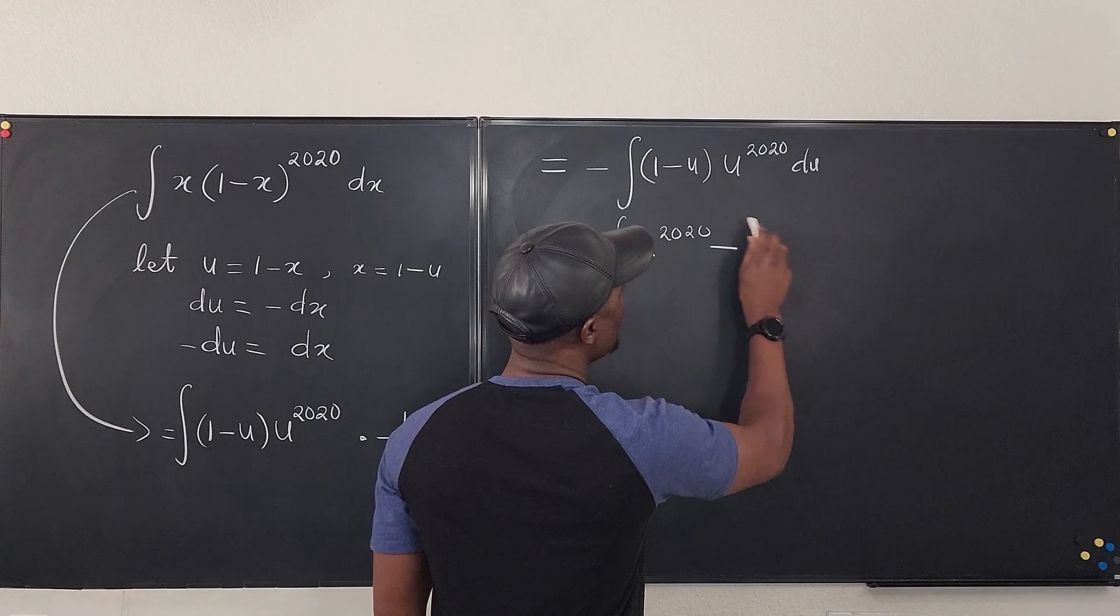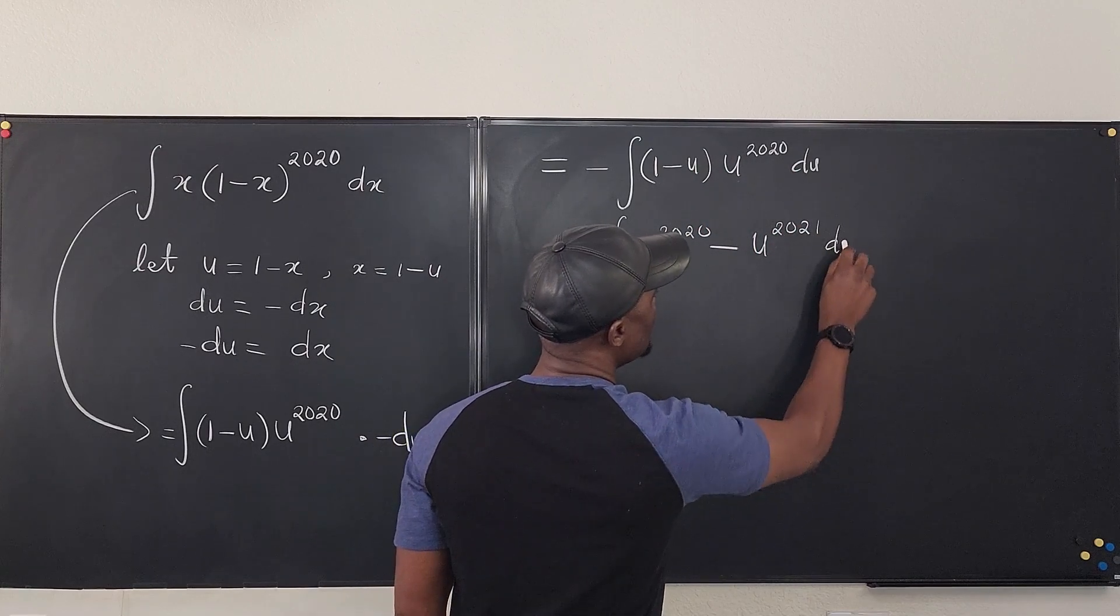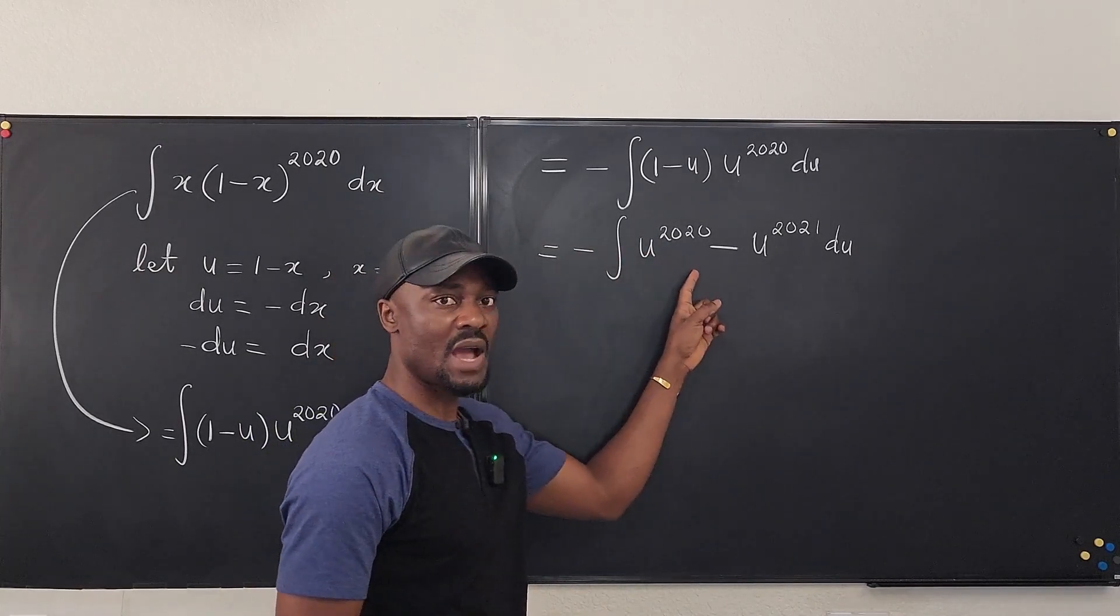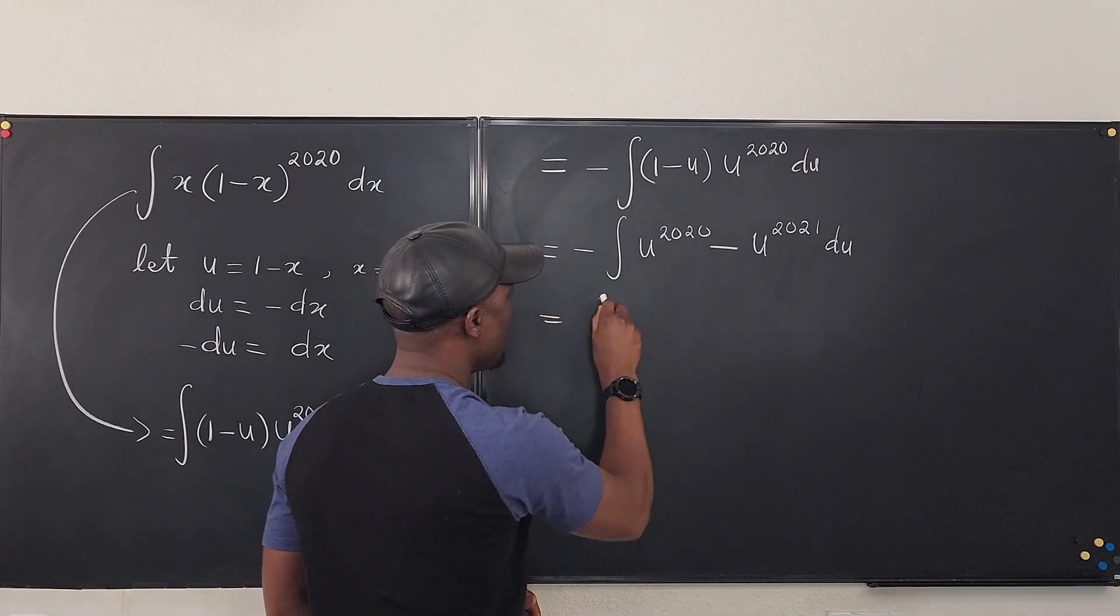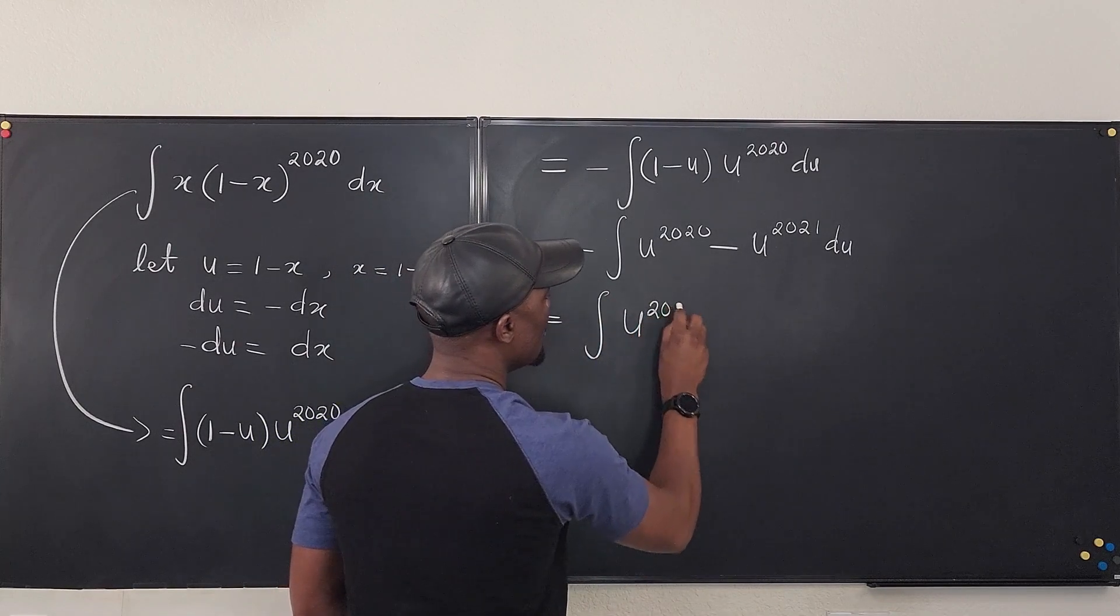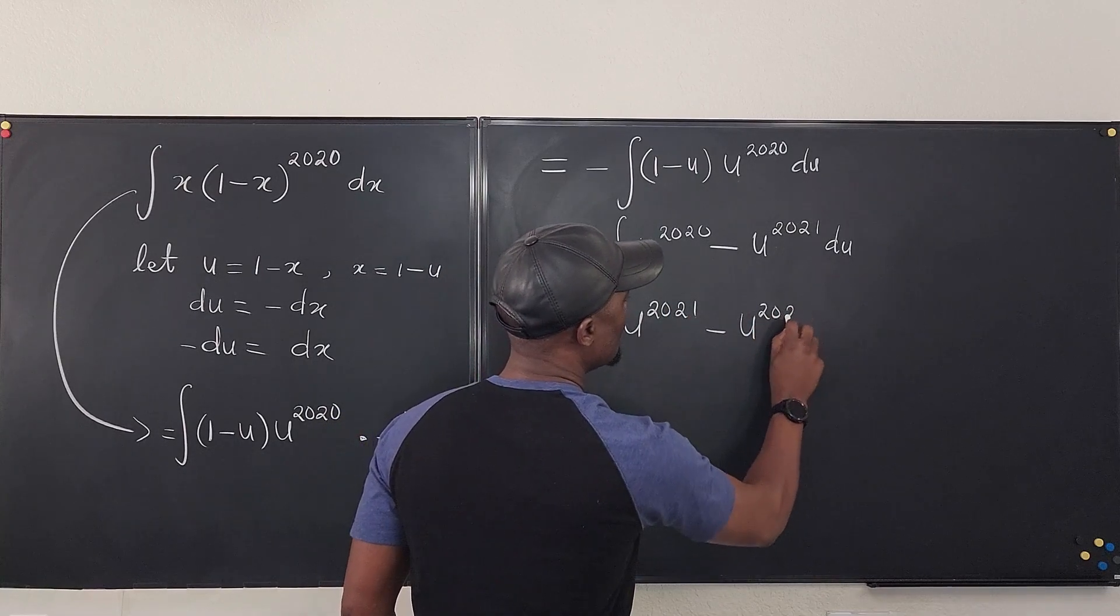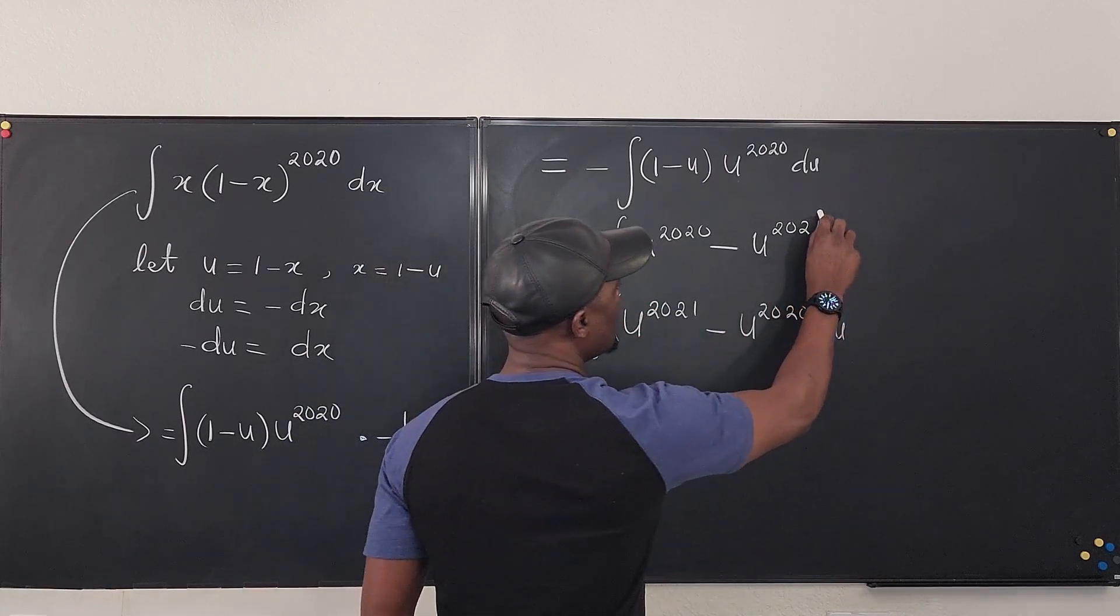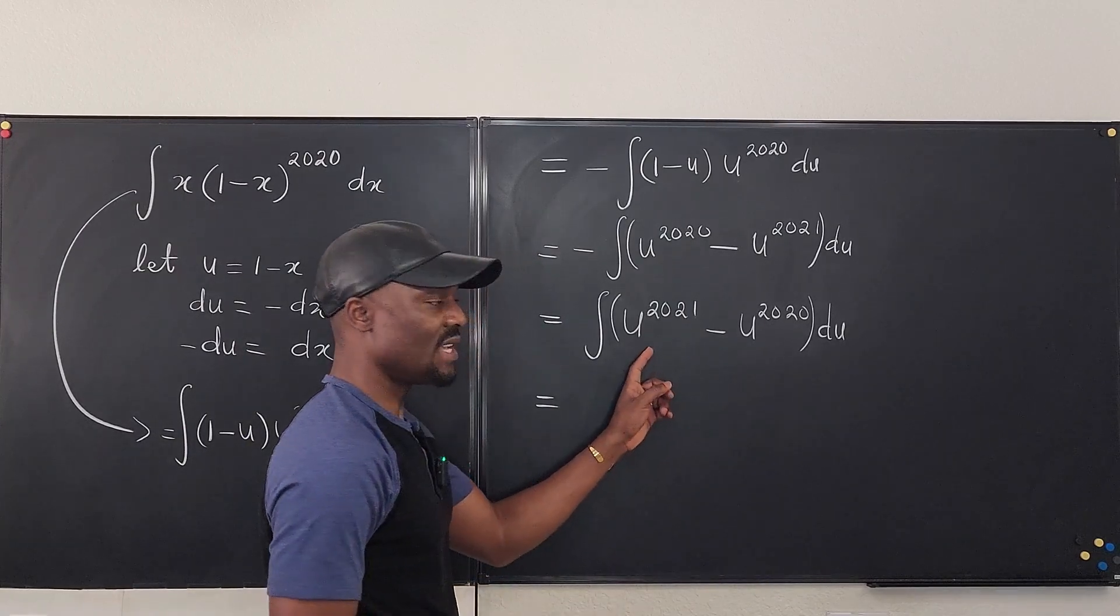You still have du. I don't like this minus sign here - if you bring in the minus sign it switches the position of these two subtractions. So you're going to have the integral of u to the 2021 minus u to the 2020, and it's du everything du.